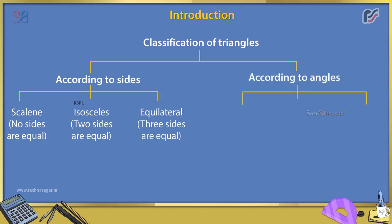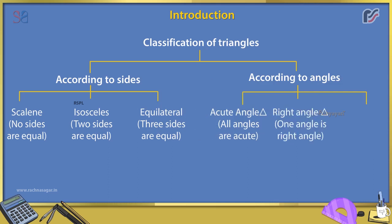According to angles: Acute angle triangle — all angles are acute. Right angle triangle — one angle is a right angle. Obtuse angle triangle — one angle is obtuse.